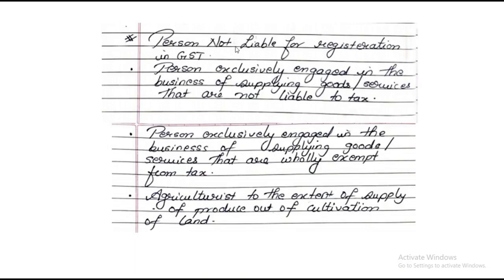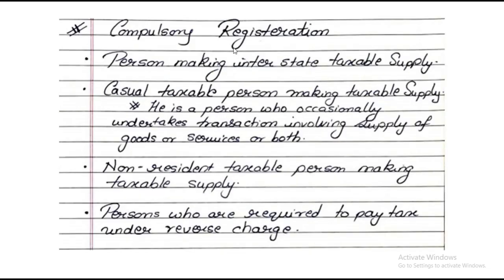Next: persons not liable for registration. Number one — a person exclusively engaged in the business of supplying goods and services that are not liable to tax; GST registration is not compulsory. Number two — a person exclusively engaged in supplying goods or services that are wholly exempt from tax; no need to register. Number three — an agriculturist, to the extent of supply of produce out of cultivation of land in raw form; GST registration is not compulsory.